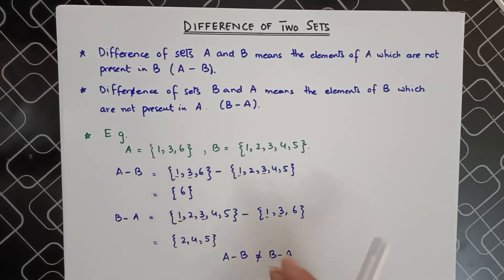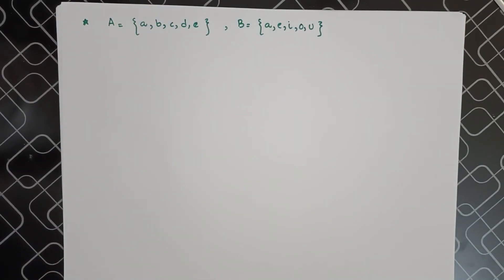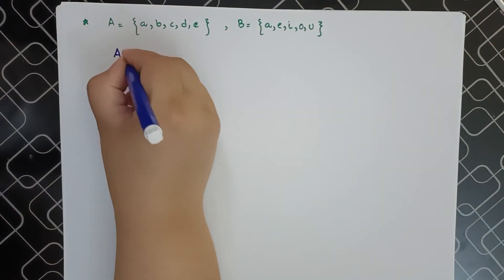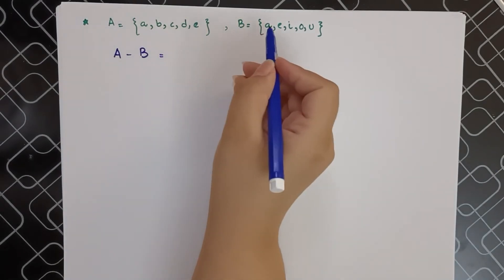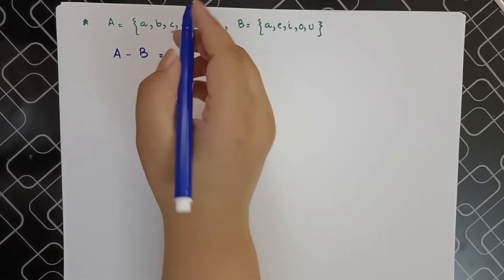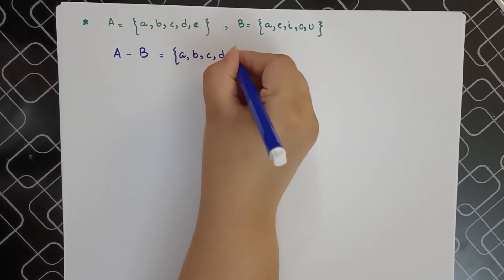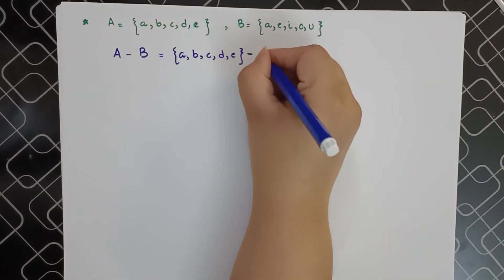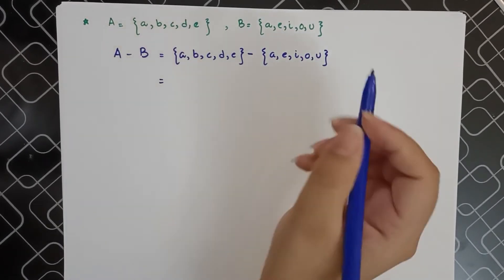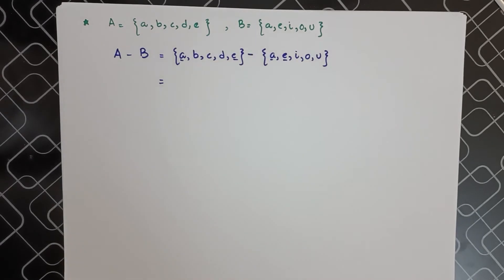Let me give you another example to help you understand the concept better. We have two sets: A is {A, B, C, D, E} and B is {A, E, I, O, U}. When we are asked to find A minus B, we subtract the elements of B from A, and the remaining elements are written as the answer. So it's {A, B, C, D, E} minus {A, E, I, O, U}. The common elements here are A and E.